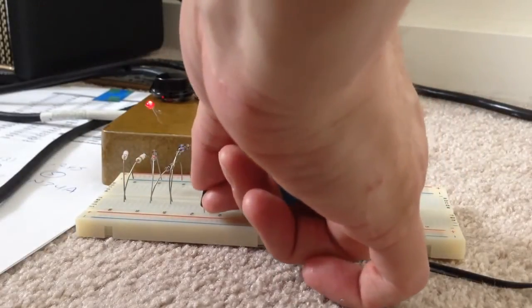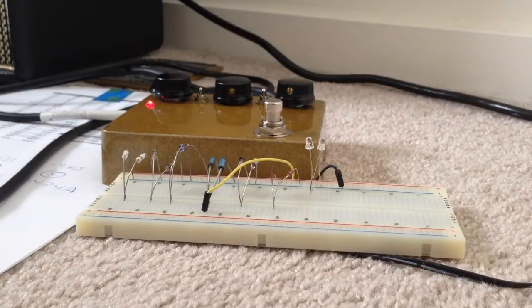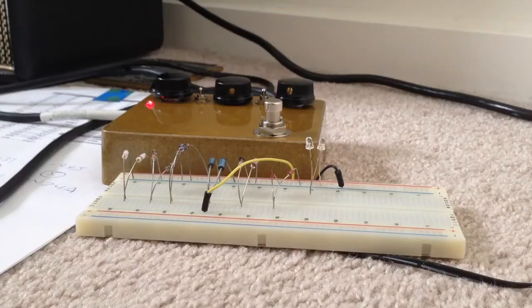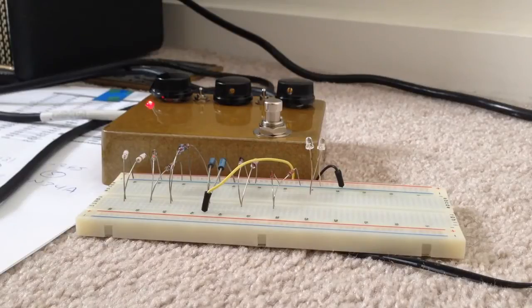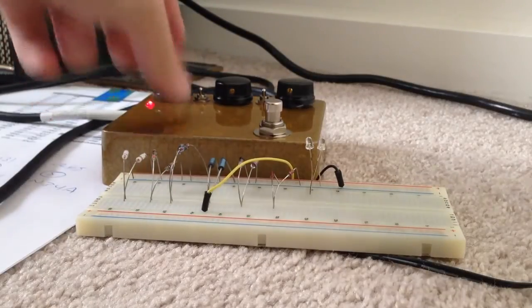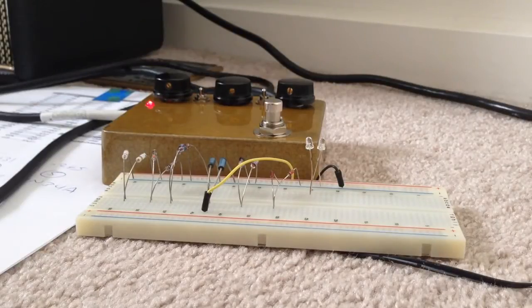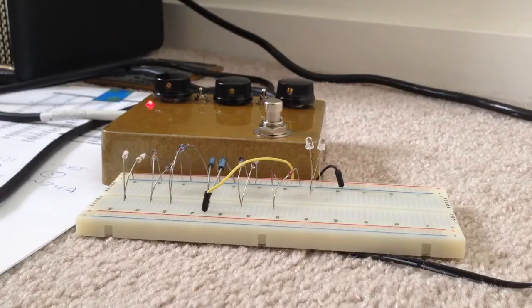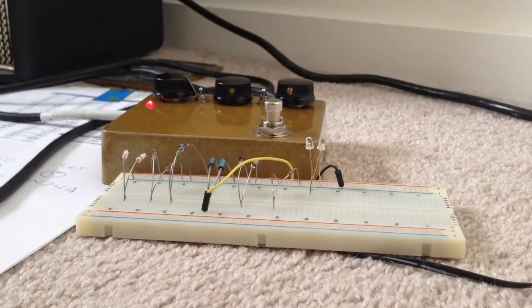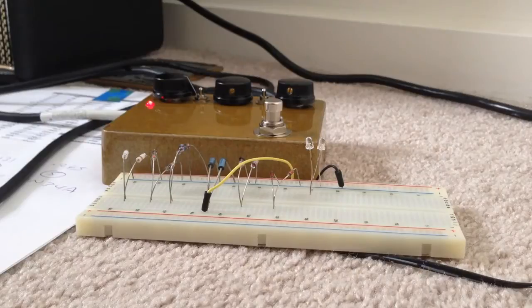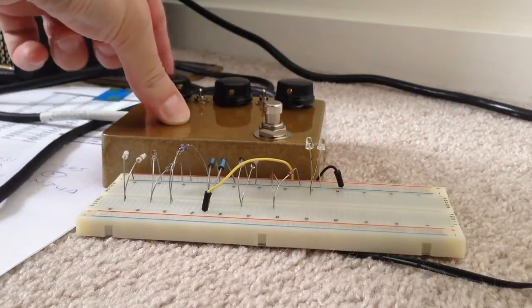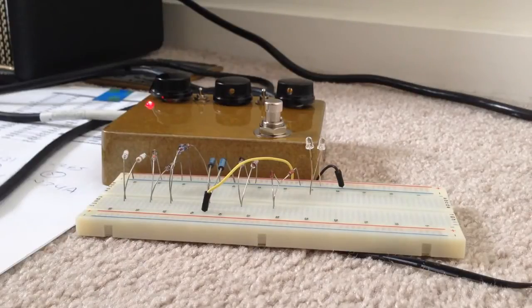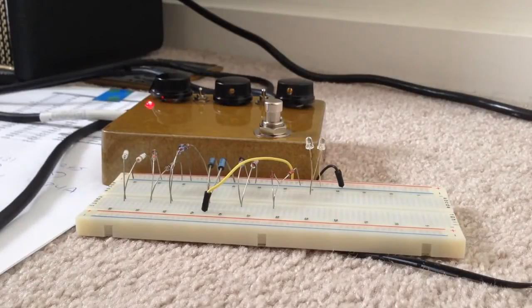Let me jump over to the Schottkys. These are the 1N5818. Forward voltage is the lowest of any of these, at 0.13, so they'll kick in really early. In a Klon circuit I would not use these diodes, but it was fun to try them.